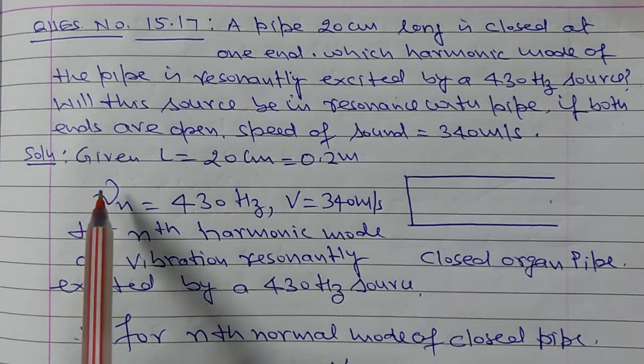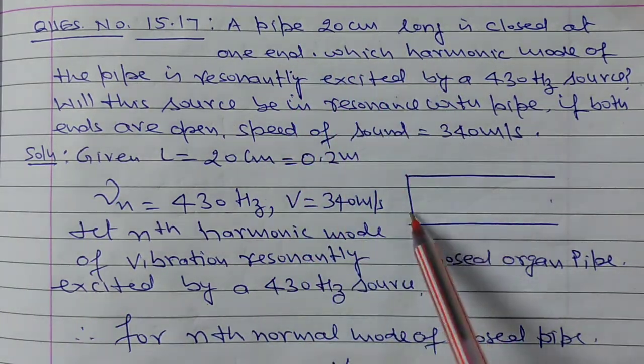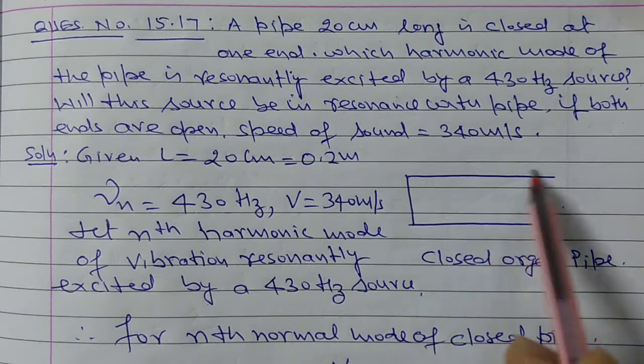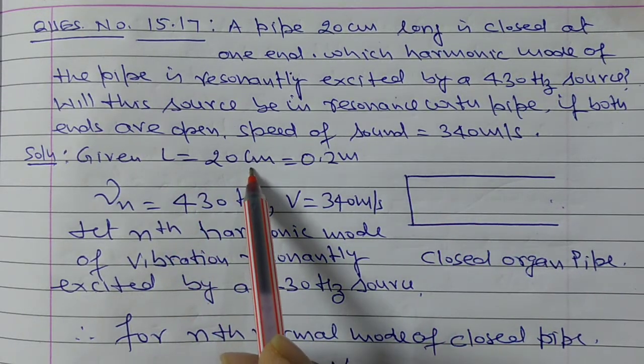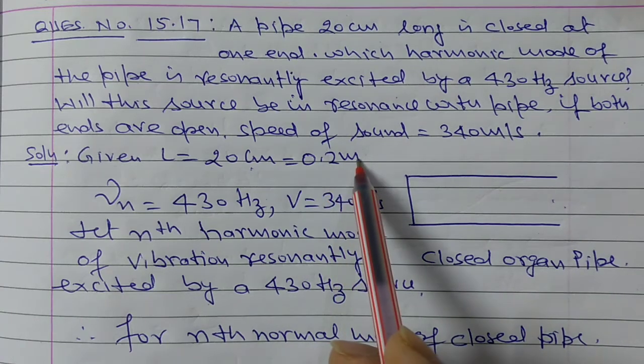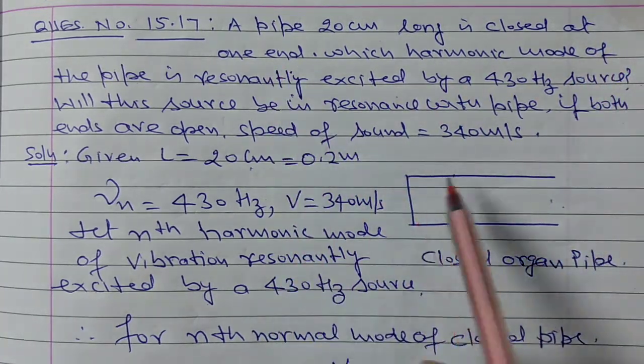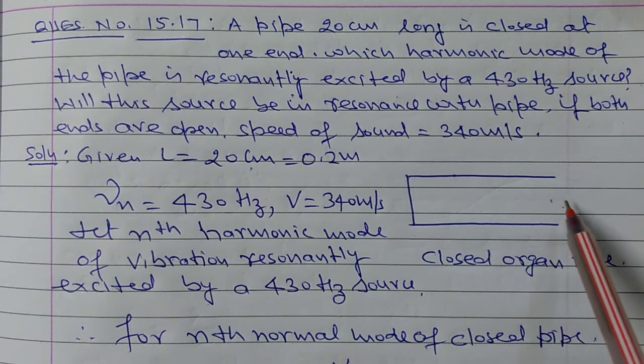In this question, given that a pipe of 20 cm long, L is equal to 20 cm, or this is equal to 0.2 m, and this is closed at one end and open at other end.